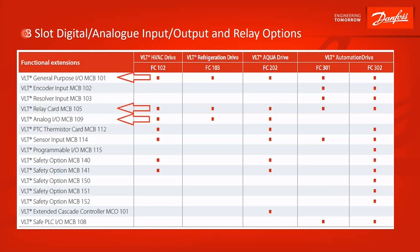These are all of the different B slot options: digital, analog, input, output, and relays, and the different drives they're compatible with. We're going to focus on these three: the general purpose input-output, the MCB101; the relay card, MCB105; and the analog input-output, MCB109.